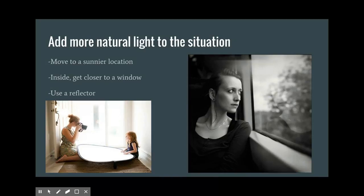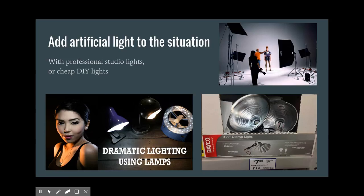You can buy reflectors — even a good small one with a white side and a gold or silver side for about $3-4. Or you can just use a piece of white foam core, which works just as well and costs only two or three dollars. You can also add artificial light to the situation using professional studio lights or cheap DIY lights.